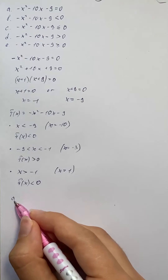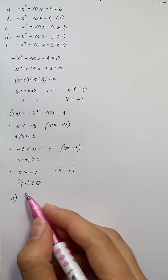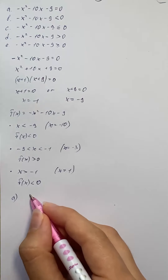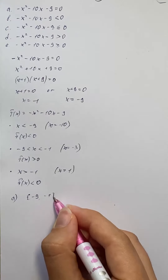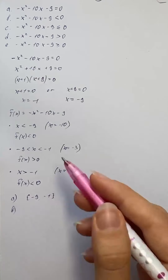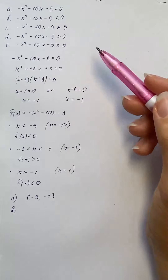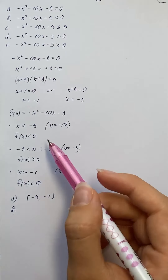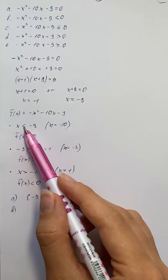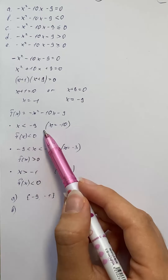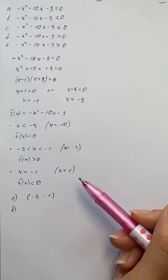So the solution set for the equation is negative 9 and negative 1. For the inequality less than 0, we're going to use our negative intervals, which are x less than negative 9 and x greater than negative 1.